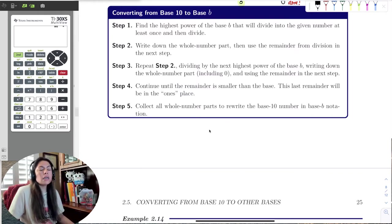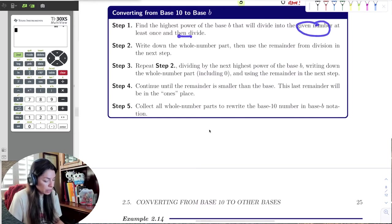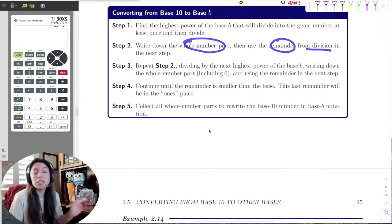In this step process here is exactly what I just went over. So you identify the base B and you find the highest power that will divide into the base 10 number at least once. And then write down that whole number part.